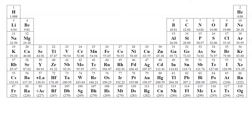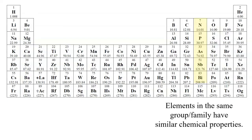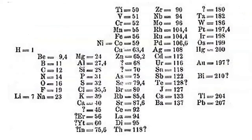Let's take a look at the modern periodic table, focusing on group 14, which contains the elements nitrogen, phosphorus, arsenic, antimony, and bismuth. Elements in the same group or family have similar chemical properties. In an early version of Mendeleev's periodic table, nitrogen, phosphorus, and arsenic are located in this horizontal section.